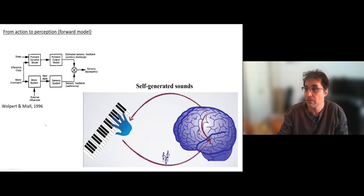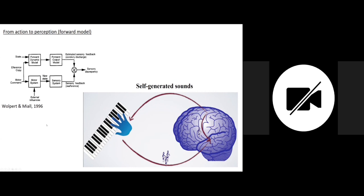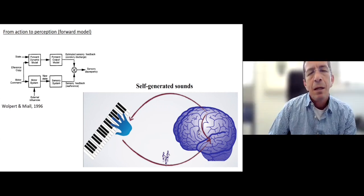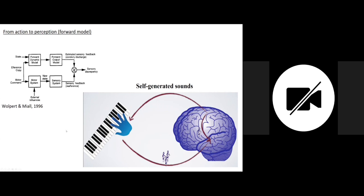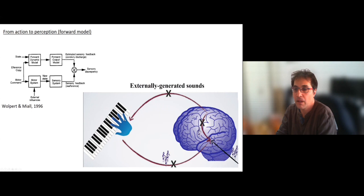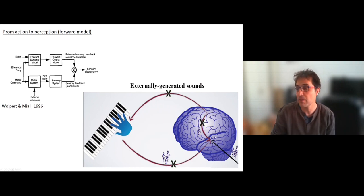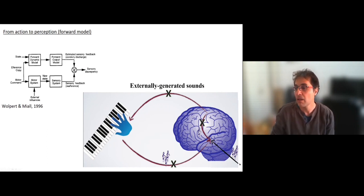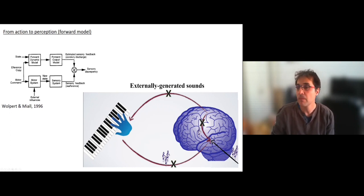A prominent theory in motor control suggests that during generation of voluntary movements, motor commands are sent not only to the effector producing the movement, but also to sensory regions associated with the consequences of the action. For example, when I play the piano, my motor cortex is active and sends motor commands to the hand, but in parallel it also sends what's called efference copies, modulating neural activity in auditory cortex while expecting the reafferent signals from the piano. When identical sounds come from an external source, there are no efference copies and the auditory cortex is not modulated by these predictive signals — making the interaction between the stimulus and auditory cortex different in active versus passive conditions.